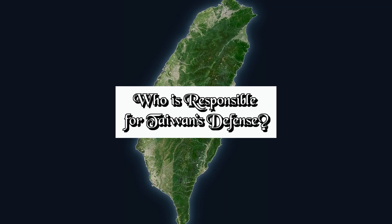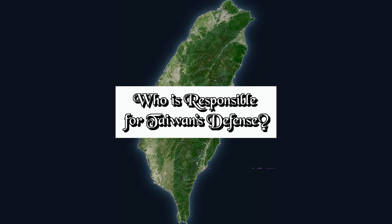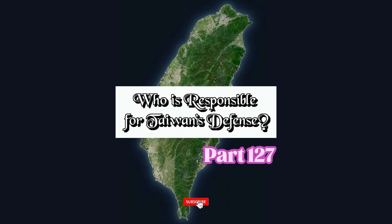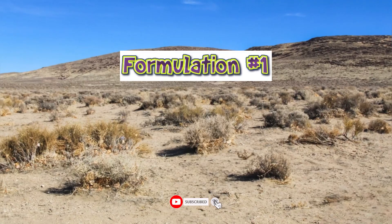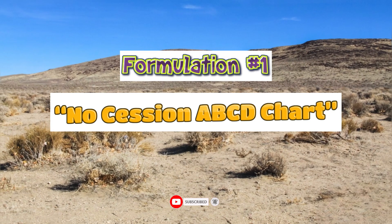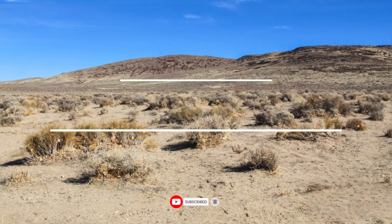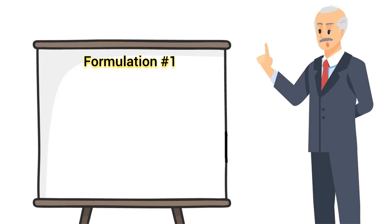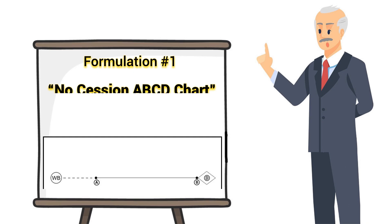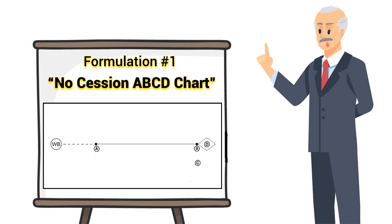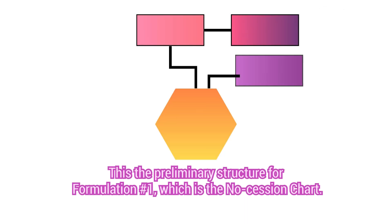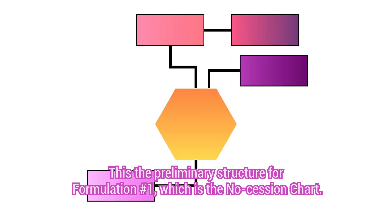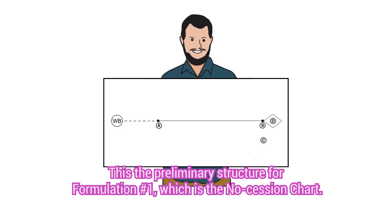Who is responsible for Taiwan's defense? Part 127. Formulation No. 1, No Session ABCD Chart. This is the preliminary structure for Formulation No. 1, which is the No Session Chart.